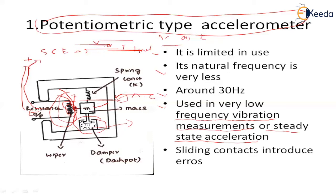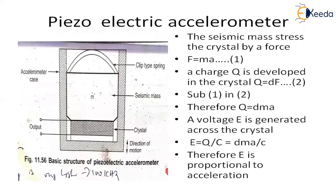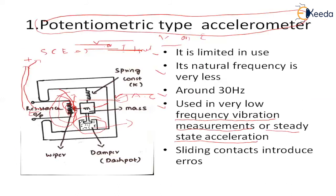So this method is used only for low-frequency vibration measurement or steady-state acceleration. The disadvantage is the sliding contact which introduces errors. That is the reason we move to the next method — the disadvantages of the existing method will be compensated by the next type, which is the LVDT type accelerometer.